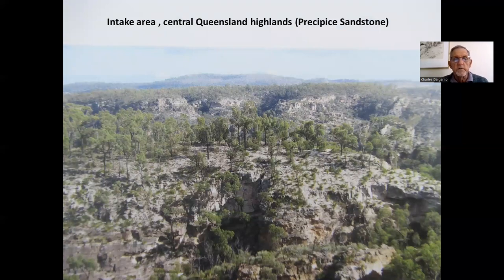In the regions of central Queensland and the St George Highlands, the Precipice Sandstone is one of the main intake units and forms very prominent ridges along the Great Dividing Range in that southern central region of Queensland.